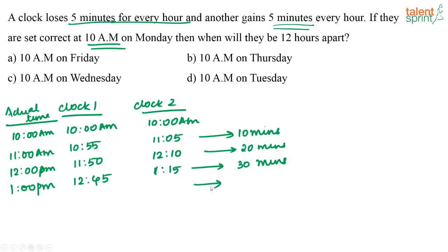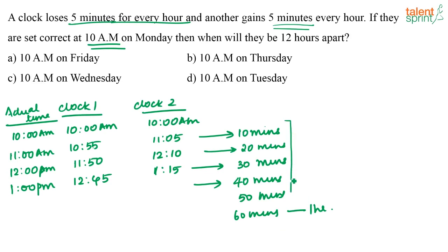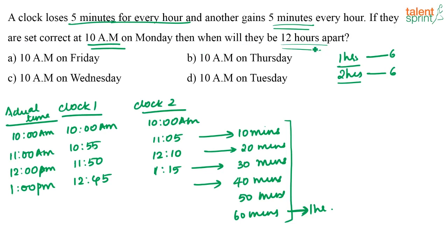The difference between the times shown by both clocks is increasing by 10 minutes each step — 10, 20, 30, 40, 50, 60 minutes and so on. So for every 6 hours, the difference in timing shown by the clocks increases by 1 hour. After the first 6 hours, the difference is 1 hour; after 12 hours, the difference is 2 hours. The question asks: when will they be 12 hours apart?